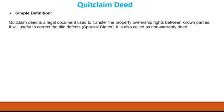The quitclaim deed is useful to transfer property ownership rights between known parties — they highlight only known parties. If you are conveying your property rights to unknown parties, you have to use a warranty deed. If you are conveying a clear title, you use a warranty deed. With a quitclaim deed, you are simply quitting from your rights — just conveying your interest without giving any warranty or guarantees on the property.